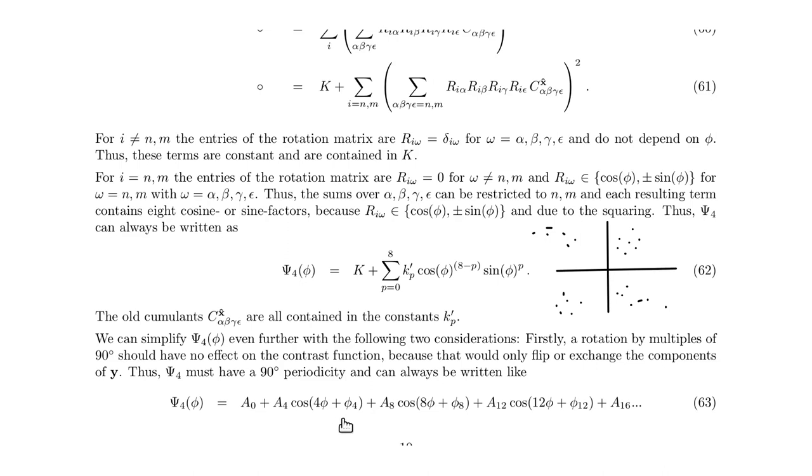A constant plus a term that oscillates with a four times per full rotation, which would correspond to a 90-degree rotation. But it may also oscillate eight times through a full rotation, so that would imply 45-degree period.